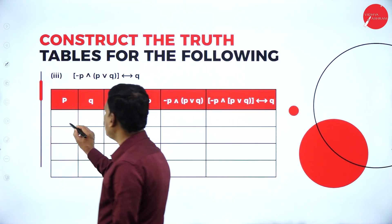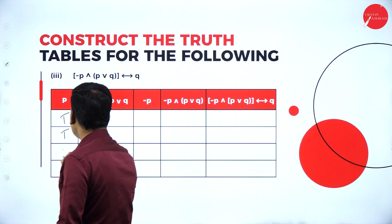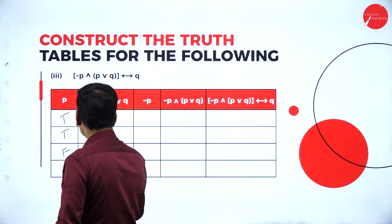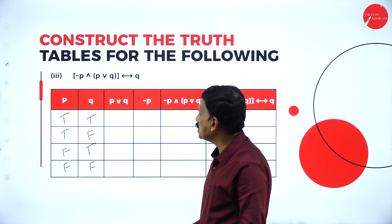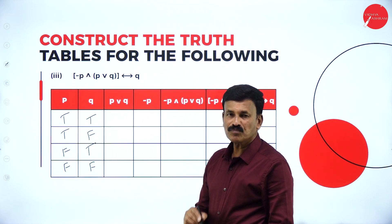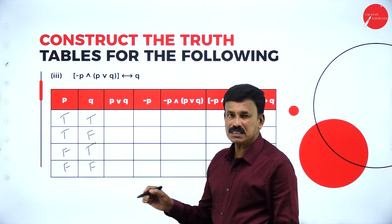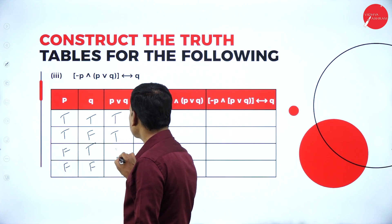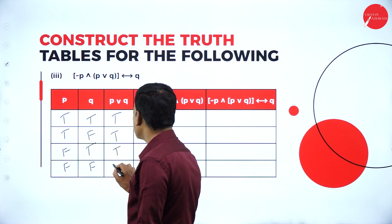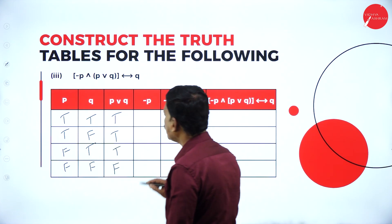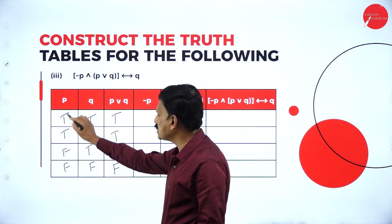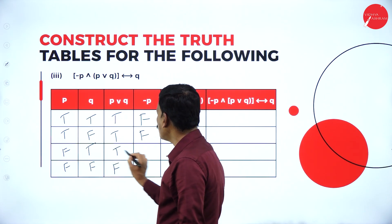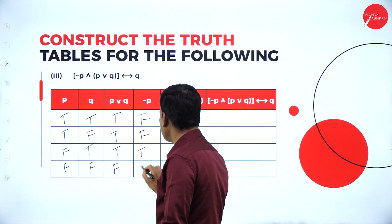As usual, P is true, true, false, false; Q is true, false, true, false. For P disjunction Q: true and true is true, true and false is true, false and true is true, false and false is false. Negation of P: for T it is F, for T it is F, for F it is T, for F it is T.